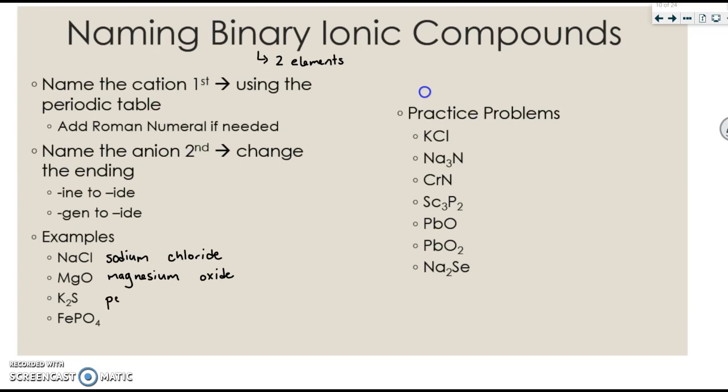Third one down, K is potassium. Remember, don't worry about that 2 right there. And sulfur changes to sulfide. Please change this one on your PowerPoint to just FeP. Fe is iron, and iron requires a roman numeral, so we'll come back to that. P is phosphide.